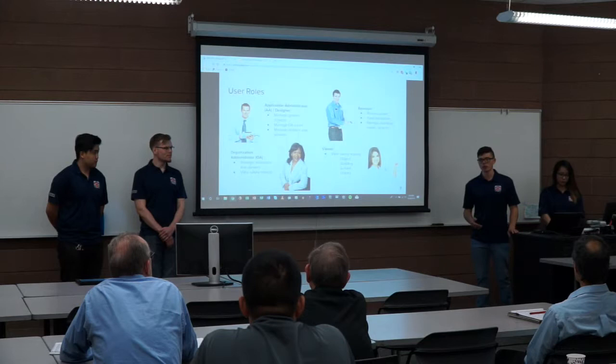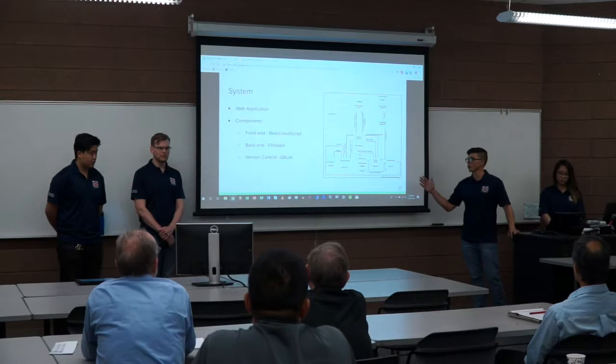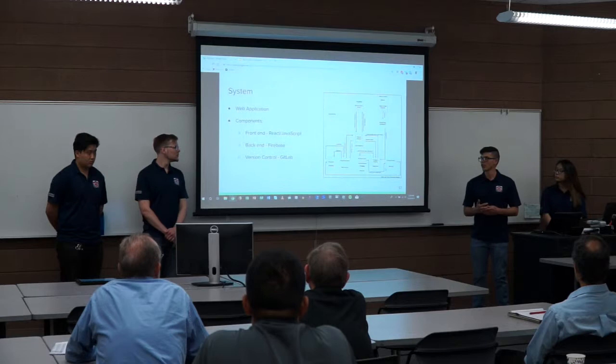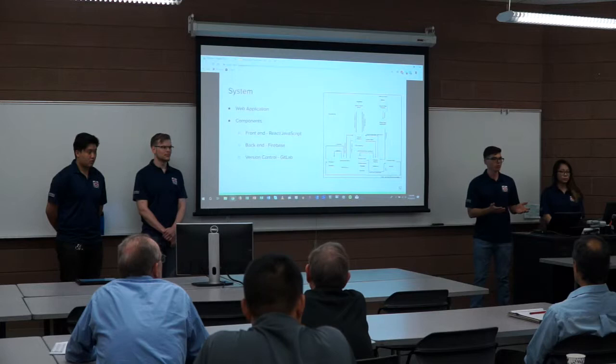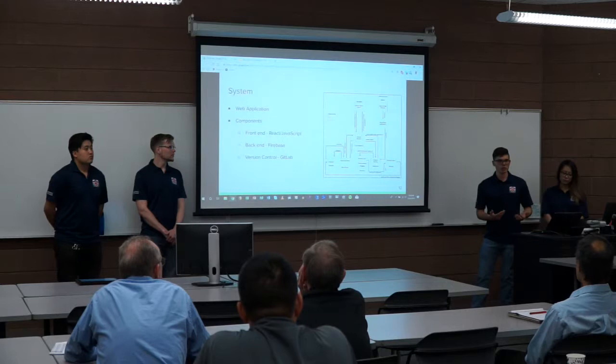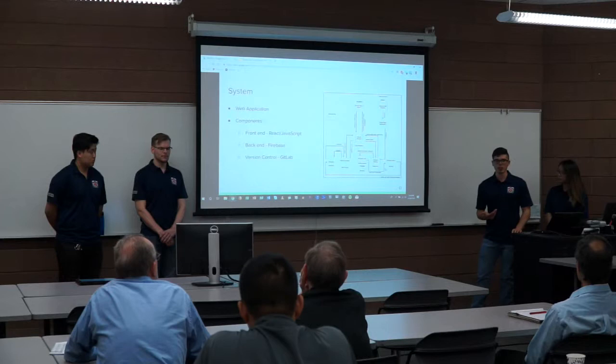This graphic shows the different components of our software system and how they interact. The three primary components of our web application are the front end, back end, and version control. The front end is the part you as the user can interact with on your computer, and we created it using JavaScript and the React framework, which is developed by Facebook and widely used in web application development.